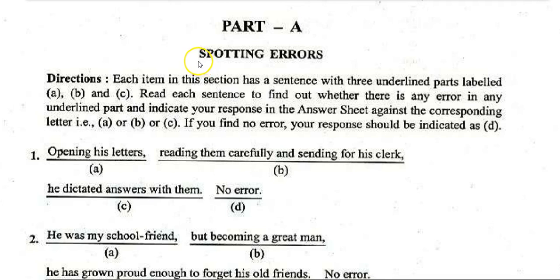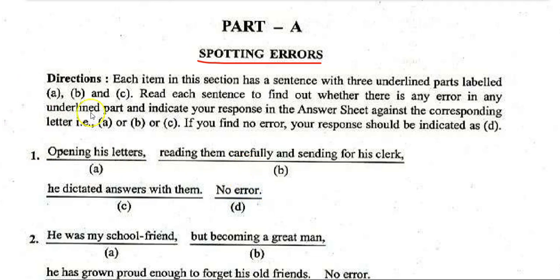The English section starts with 14 error-detection questions. Each item has a sentence with three underlined parts labeled A, B, and C. Read each sentence to find out whether there is any error in the underlined part and indicate your response on the answer sheet against the corresponding letter A, B, or C. If you find no error, your response should be indicated as D.